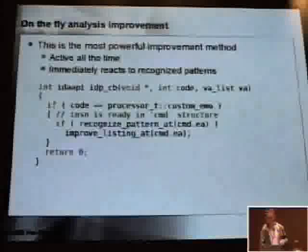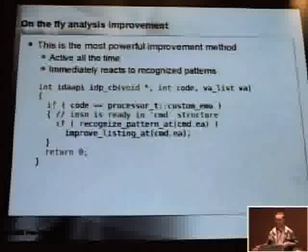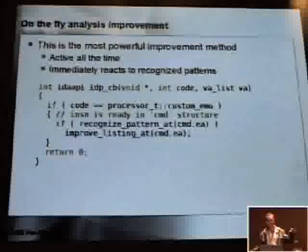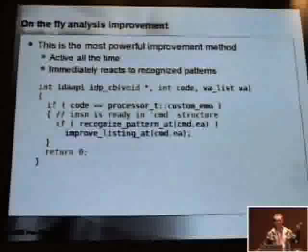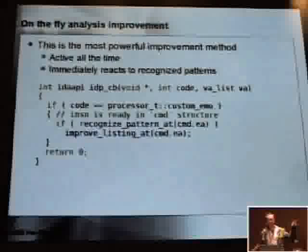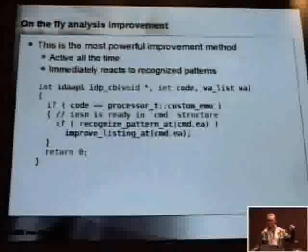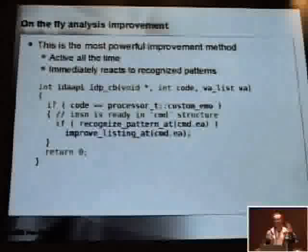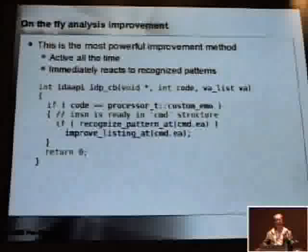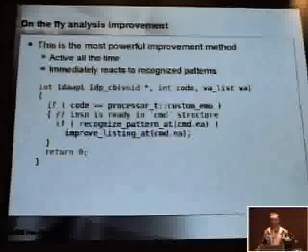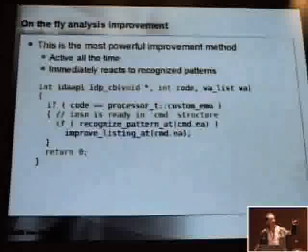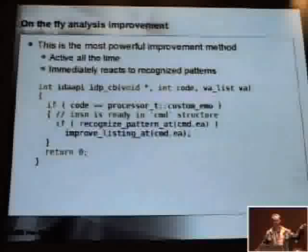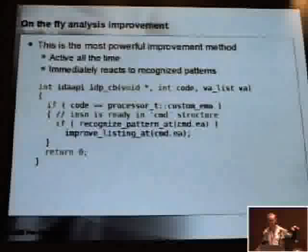Now the most powerful way: doing things on the fly. Usually we hook on the emulation event. We try to recognize something, and if we recognize something, we improve the listing at the current address. We look at the current instruction — if it's our case, we do something with the listing.